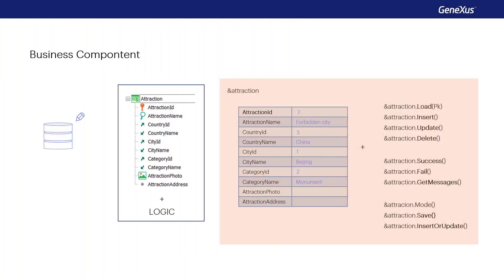In the previous video, we saw how to insert, modify, and delete a record from a business component corresponding to a single level transaction.